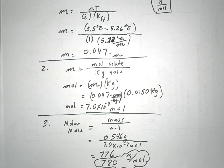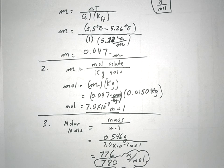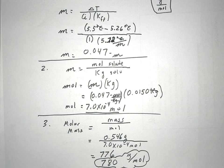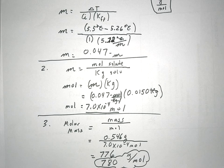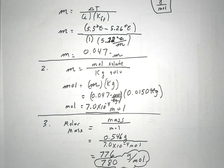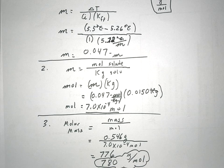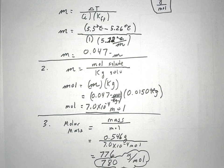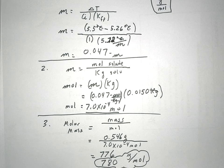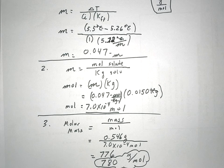So, we have a very effective and fairly inexpensive way to calculate the molar mass of an unknown solid by using colligative properties. Without this method, we would have to rely on some very sophisticated, expensive equipment like mass spectrometers. So, again, another application of colligative properties.